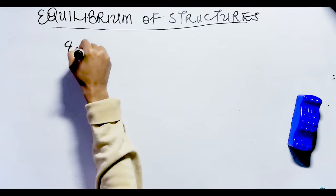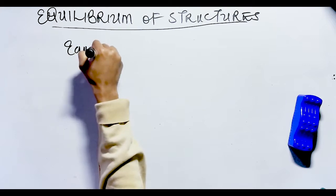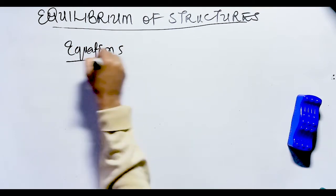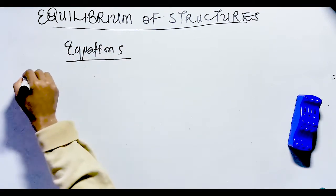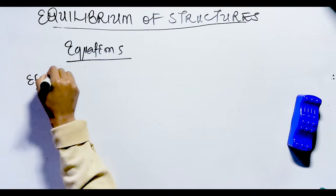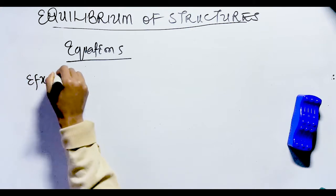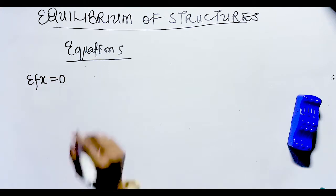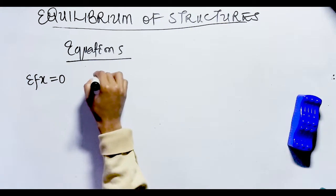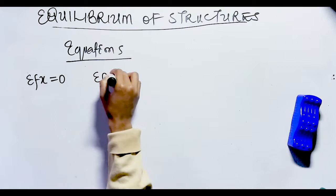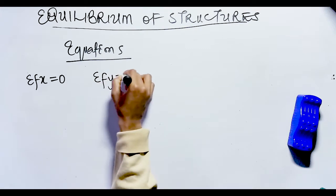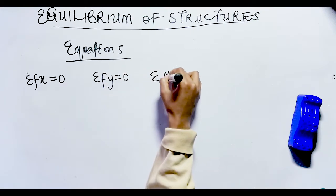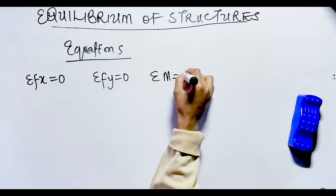Basically, there are three equations of equilibrium: the summation of Fx must be equal to zero, the summation of Fy must be equal to zero, and the summation of M must be equal to zero.